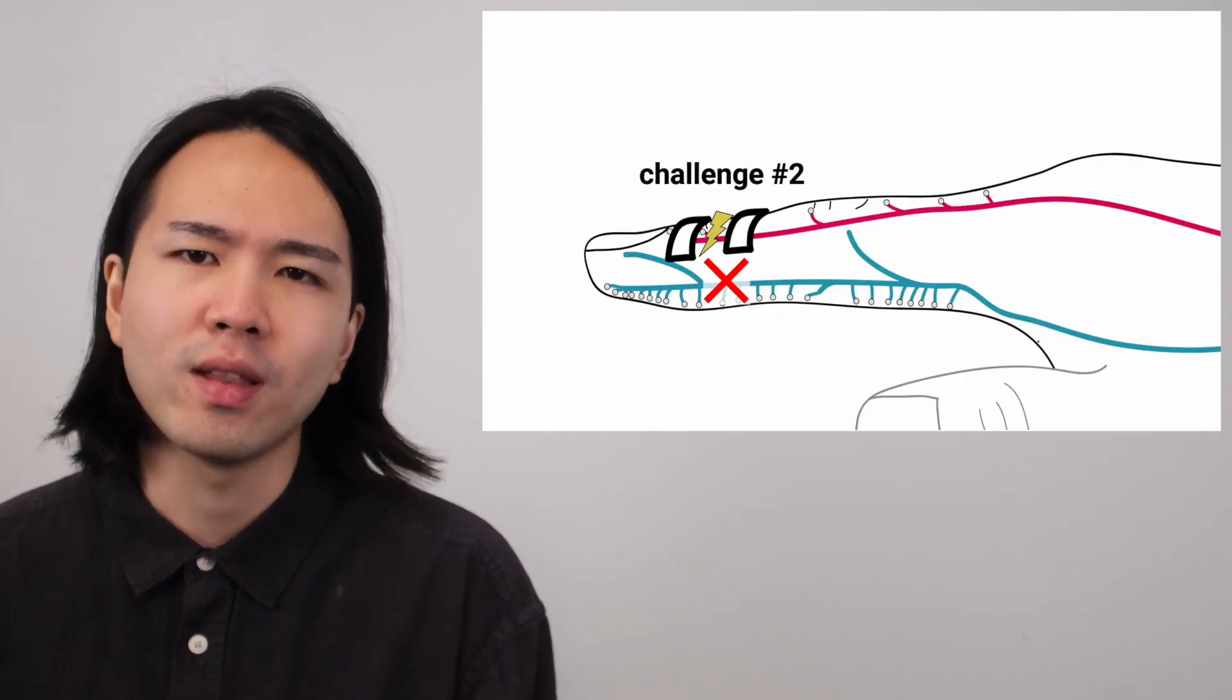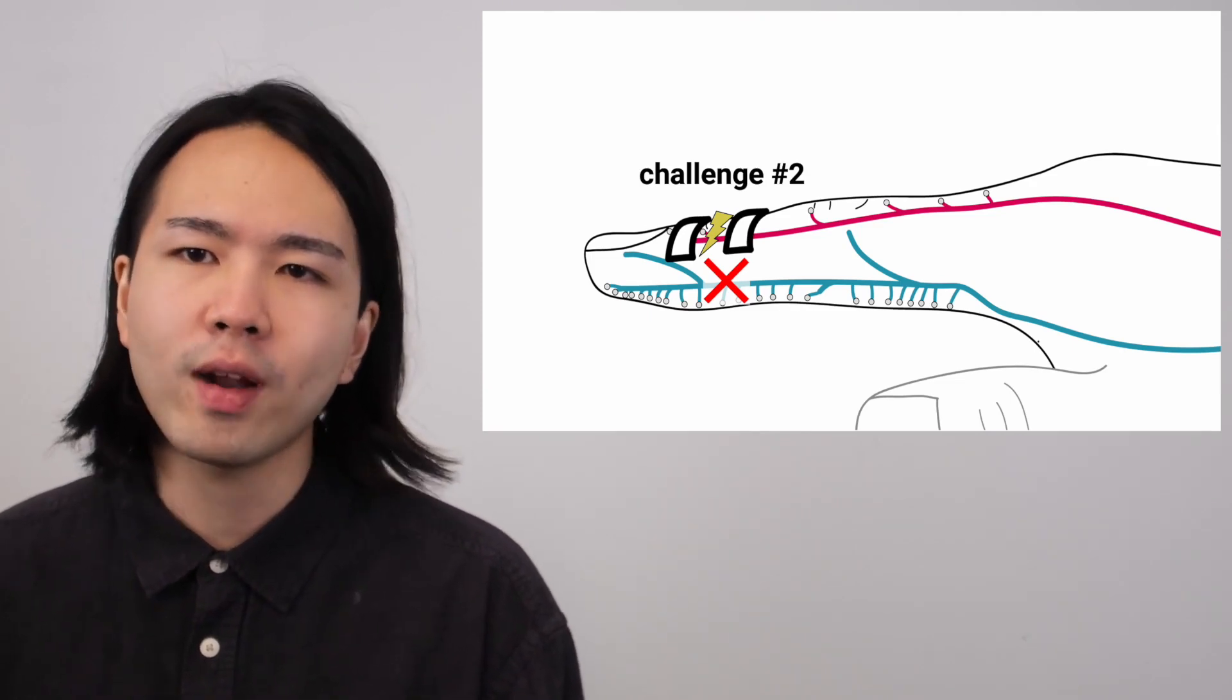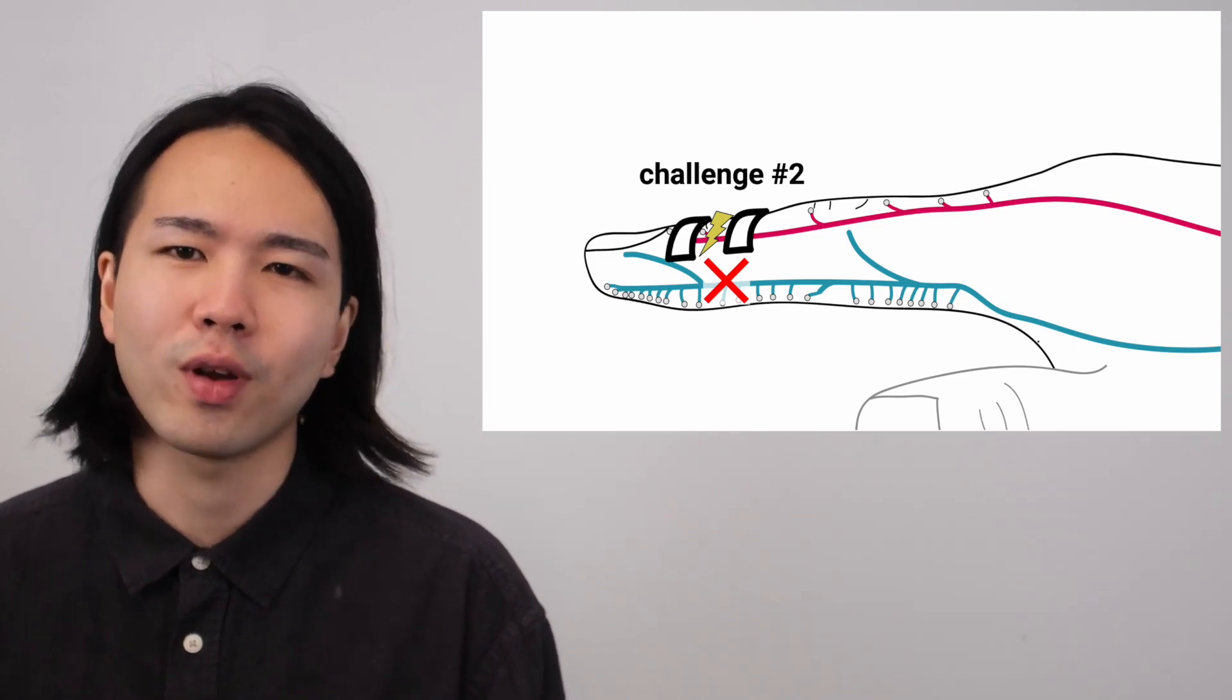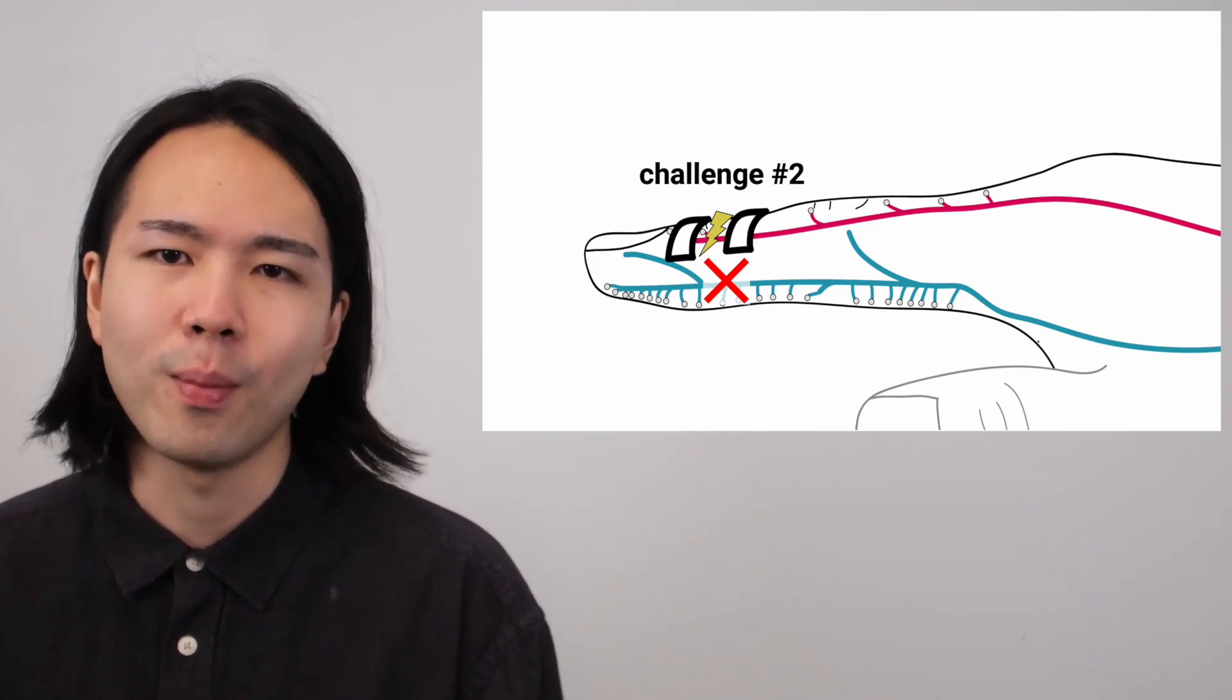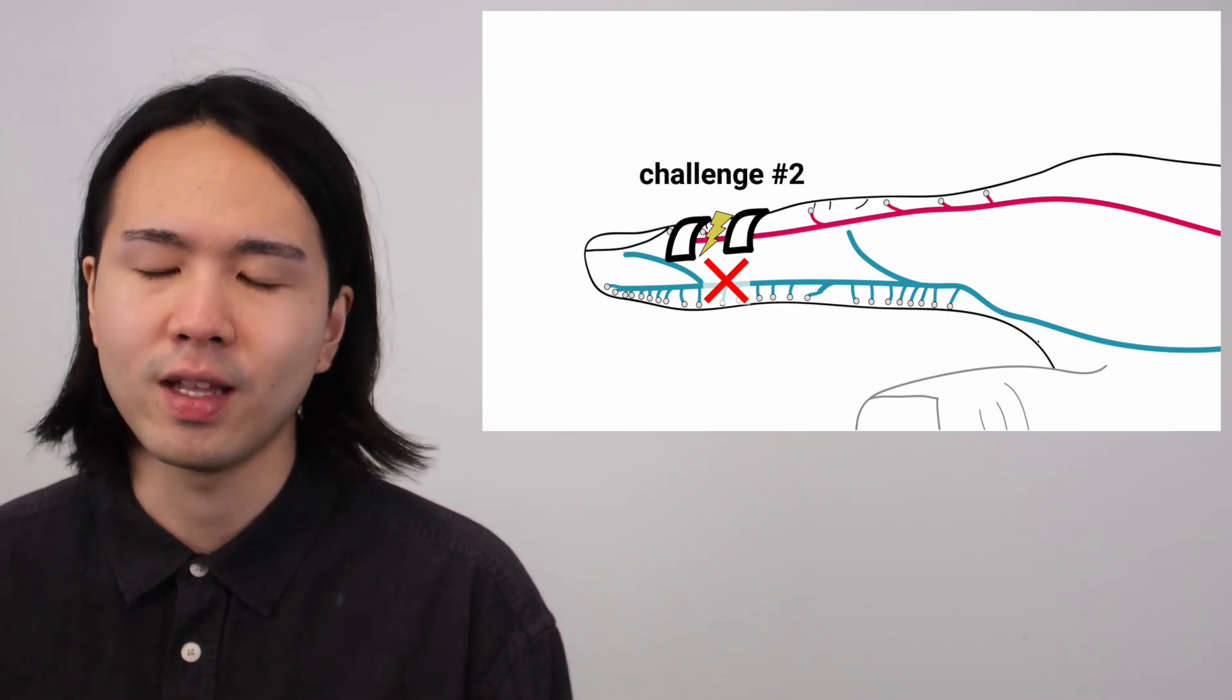Now, when I say back of the hand, you can imagine a naive placement like this, where two electrodes are side by side. Unfortunately, this doesn't work for creating sensations in the palm, because the electrical currents only reach the nerves on the back side.